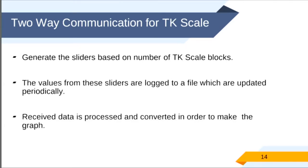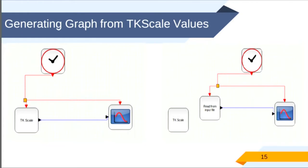The two-way communication is done by taking the values from the slider and generating the graph. For this we first generate the sliders based on the number of TK scale blocks. The plotting of the graph depends on the period parameter of the clock. So we found all the connections between TK scale and clock. We found the parameters and used it. And we generated the slider.